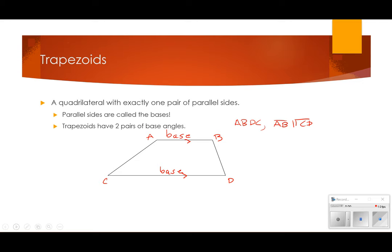Trapezoids have two pairs of what we call base angles. This is a base angle, this is a base angle — so there are two pairs. We've got base angles here and base angles here, so all of those angles are called base angles.